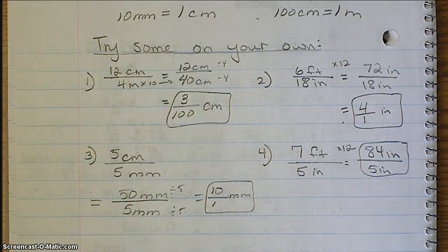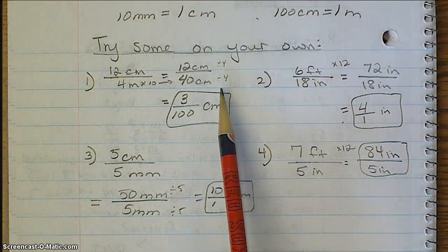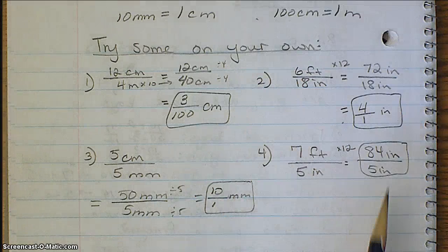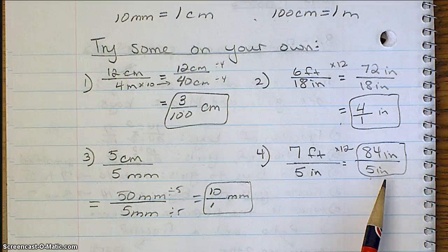And here are your answers, so you can check. A couple things to watch out for. Remember, you do want to make sure, if it can be simplified, that you do that. But in the event that it cannot be simplified, just leave your answer as the ratio. Don't get a decimal.